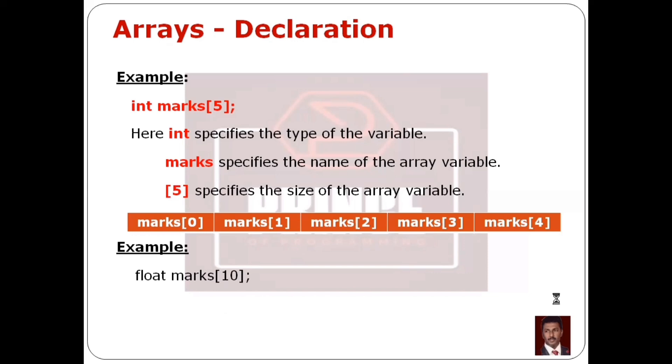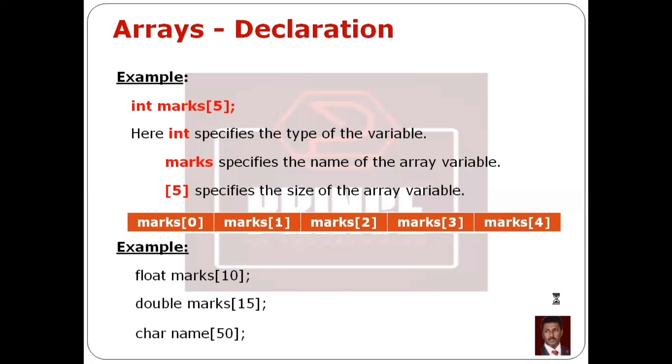We can also store floating point values in the array. We can use float, double, char, or int — any data type in the array. However, all elements in the array must be of the same data type.